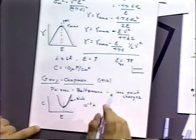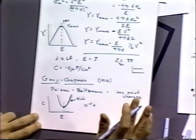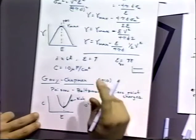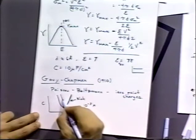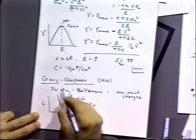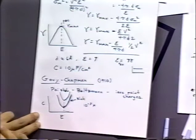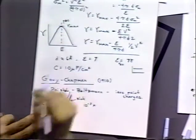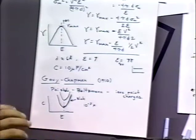However, Gouy-Chapman theory started to fail dramatically at higher and higher concentrations. The capacitance followed this hyperbolic sine shape but just kept increasing and increasing as the concentration of ions in solution increased. In other words, all you needed to do to make a tremendous capacitor was to make the concentration very large and you'd get a thousand-fold more capacitance than at a lower concentration. That's not true — people realized quite right away that this was not reflective of physical reality.